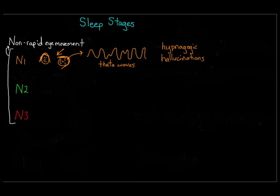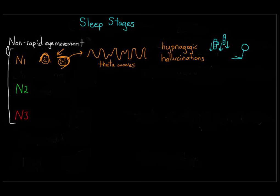If you've been doing something repetitive before bed, that can recur in your hypnagogic state. For example, if you've been on a boat all day, you may still feel like you're on water when you drift off. This is called the Tetris effect — if you've been playing Tetris, you might see visual images of blocks moving. Another common feeling during N1 is a sensation of falling, which leads to hypnic jerks, those muscle twitches you sometimes experience as you fall asleep.